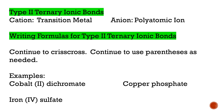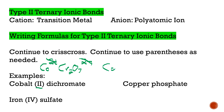Let's talk about cobalt(II) dichromate. The '2' tells us the charge on the transition metal is 2+. We look up dichromate on our polyatomic ion chart: it's Cr2O7 with a 2− charge. Remember, we can't mess with any of that — it is what it is. Since we have 2+ and 2−, they cancel each other out, and we just write the formula: CoCr2O7. That is cobalt(II) dichromate's formula.